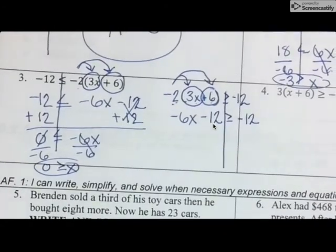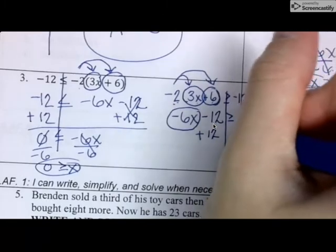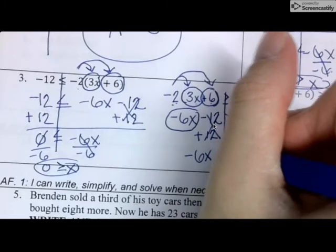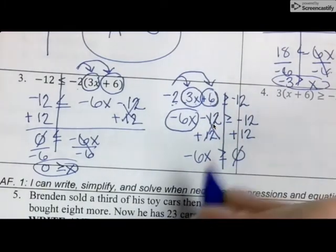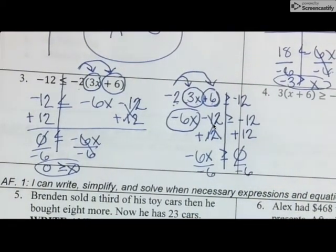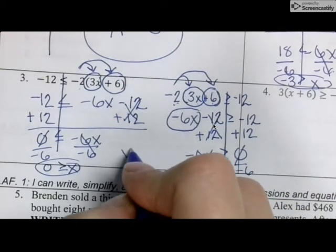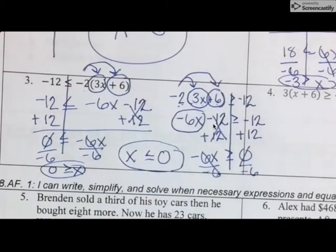To work to get the six X alone, I need to add 12 to both sides. That cancels out. I have negative six X is greater than or equal to zero. To get the X alone, I need to divide by negative six. Did I multiply or divide by negative on both sides? Yes. So my sign has to flip directions. And zero divided by anything is zero.